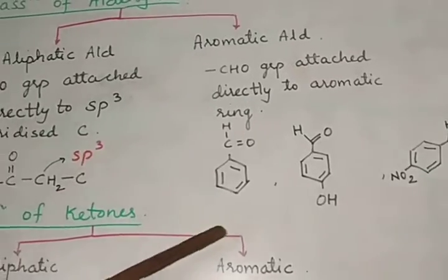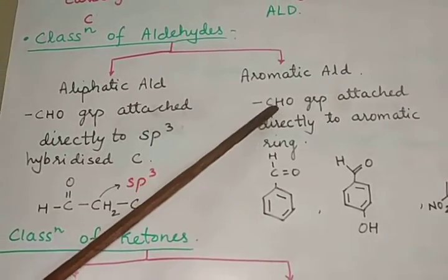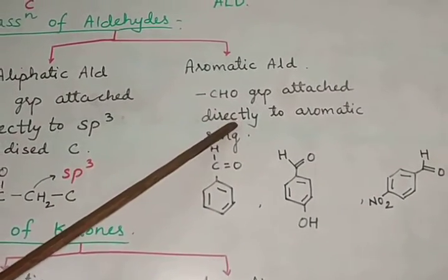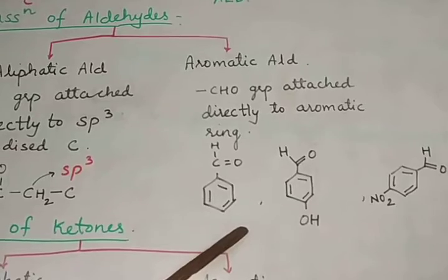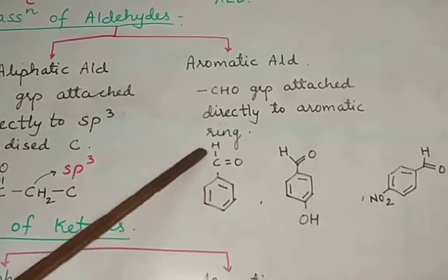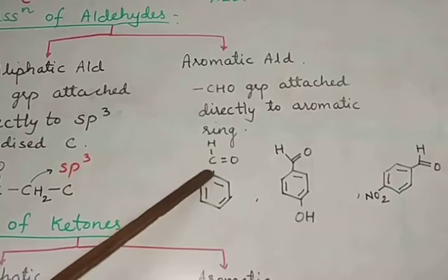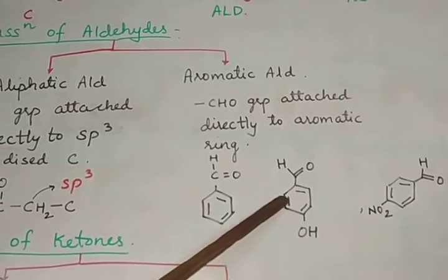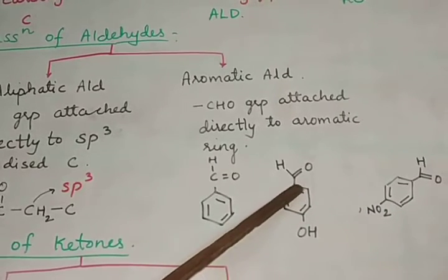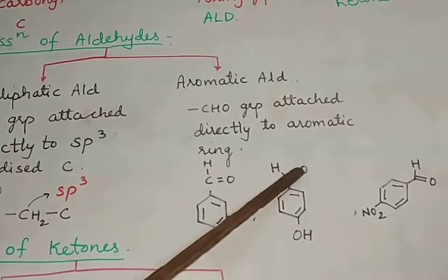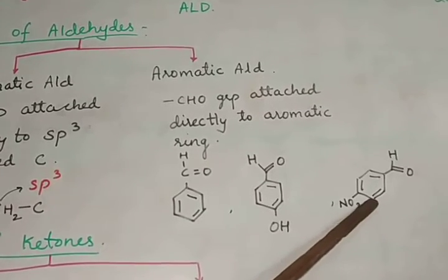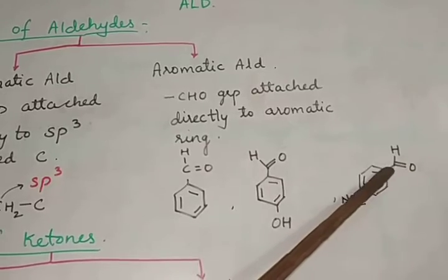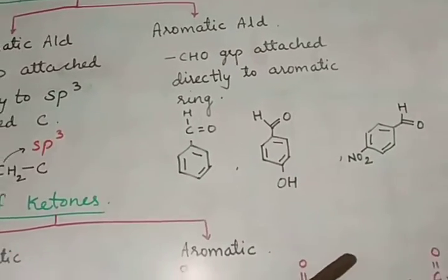In aromatic aldehydes, the CHO group is directly attached to an aromatic ring. For example, benzene ring directly bearing a CHO group, or a benzene ring with a nitro group and a CHO group directly attached — all are examples of aromatic aldehydes.